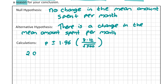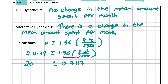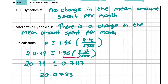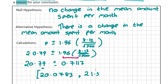With the original value of 20.79, we compute 1.96 × (8.12 / √500), which equals 0.7117. So we have 20.79 plus or minus 0.7117. The lower bound is 20.79 − 0.7117 = 20.0783, and the upper bound is 20.79 + 0.7117 = 21.5017.